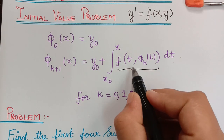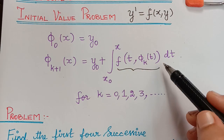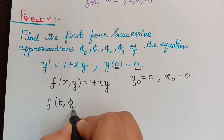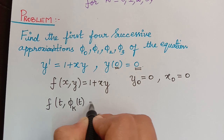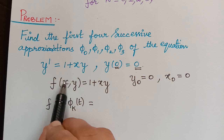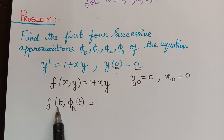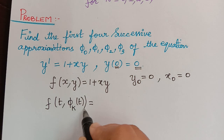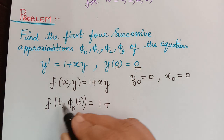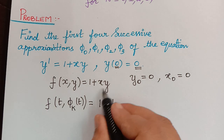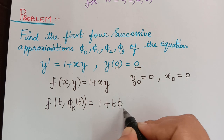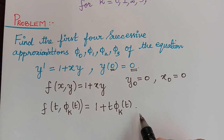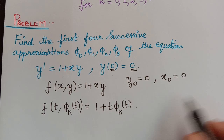Next, in order to find the successive approximations, we shall first evaluate f(t, φₖ(t)). Wherever we have x we replace it by t, and wherever we have y we replace it by φₖ(t). So f(t, φₖ(t)) = 1 + t·φₖ(t).